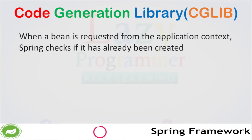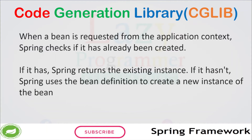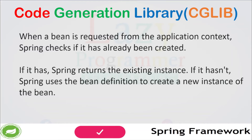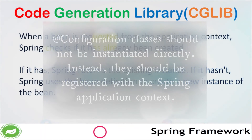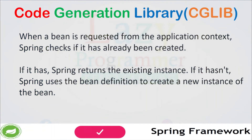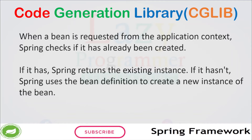When a bean is requested from the application context, Spring first checks if it has already been created. If it has, Spring returns the existing instance. If it hasn't, Spring uses the bean definition to create a new instance — that is how the Spring IOC container works. One important thing to note is that @Configuration classes should not be instantiated directly. Instead, they should be registered with the Spring application context, typically through component scanning, where you configure Spring to scan a particular path to identify any @Configuration classes.